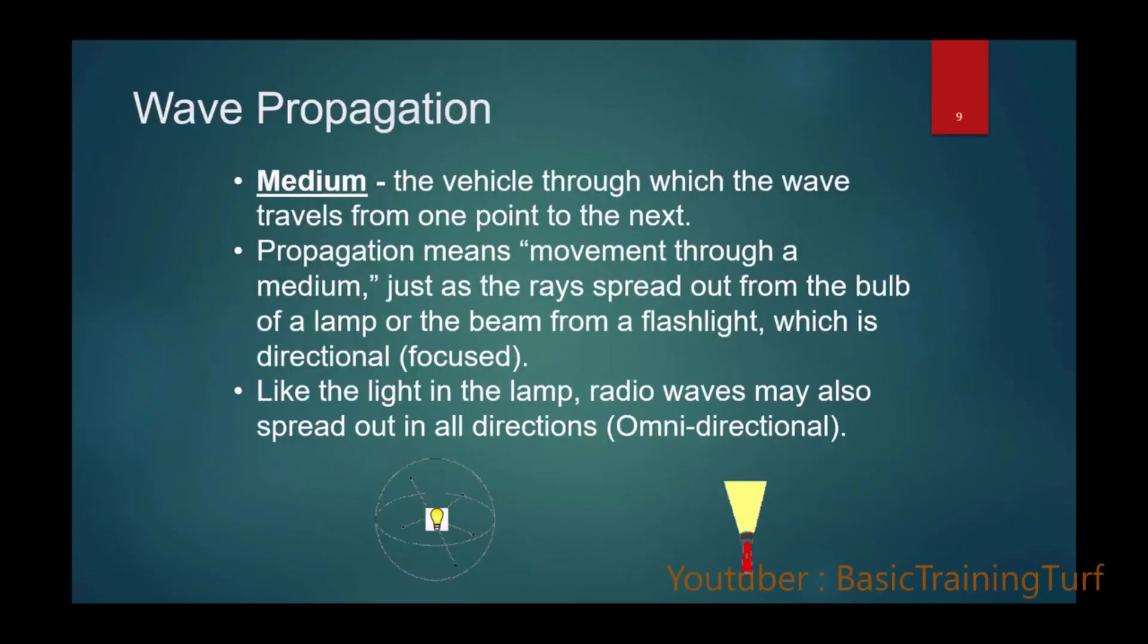Wave propagation - the medium is the vehicle through which the wave travels from one point to the next. Propagation means movement through a medium. Just as rays spread out from a lamp bulb or beam from a flashlight, this flashlight represents a directional focused nature of light. The lamp where radio may spread out in all directions would represent an omnidirectional antenna. That depends on how the antenna is constructed, whether it's omnidirectional or directional.